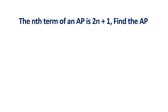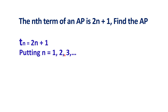Now let us consider another question. The nth term of an AP is 2N plus 1. Find the AP. So Tn equals 2N plus 1. Taking n as 1, T1 equals 2 into 1 plus 1, which is 3.